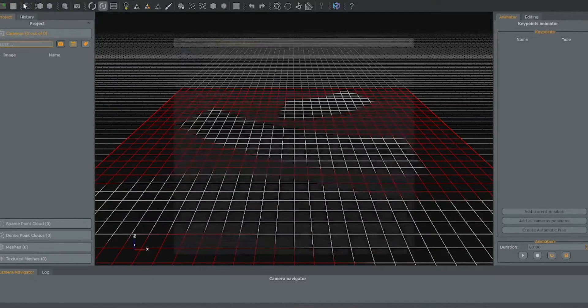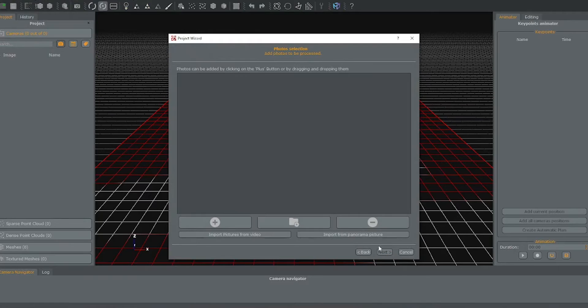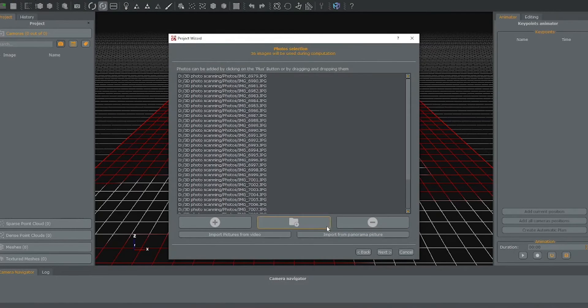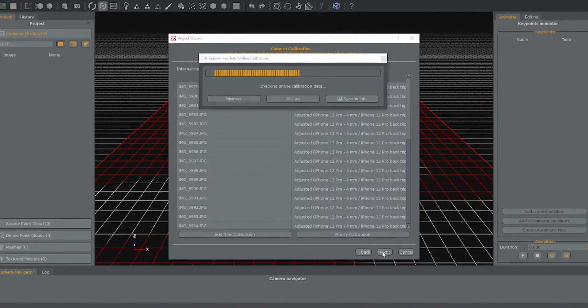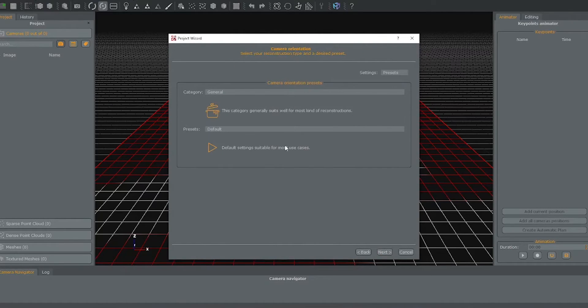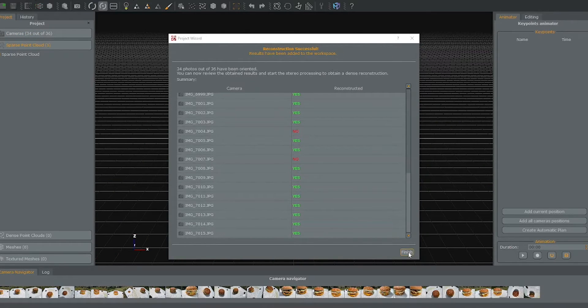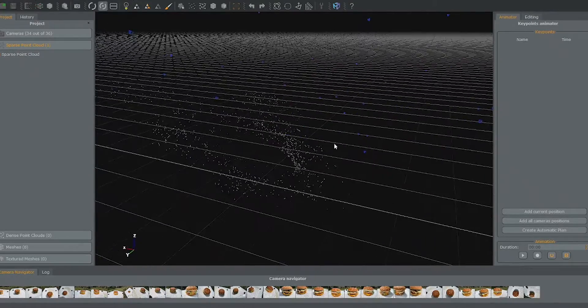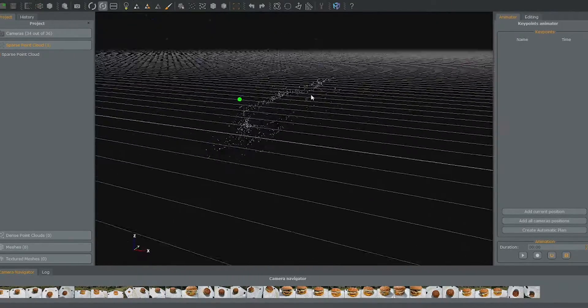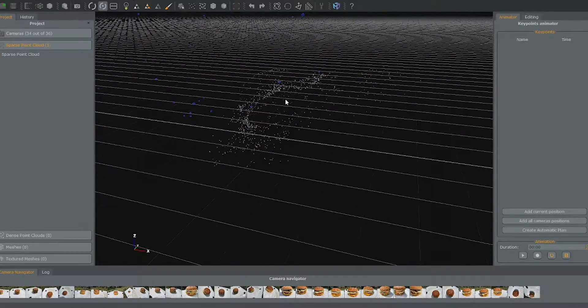So the software I'm using is called 3D Zephyr Free, and I'm going to go ahead here and select the photos I took of the Big Mac, and there they all are. This shows all the settings of the camera and whatnot, just gonna click next. Some more general settings, just click next. And then right here I'm going to run the program and this will generate a sparse point cloud, which is what you see here. And there is the outline of our Big Mac.